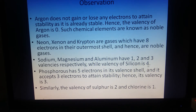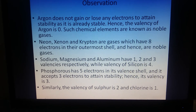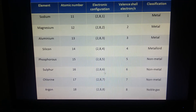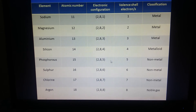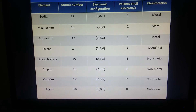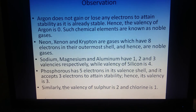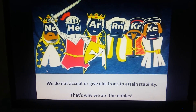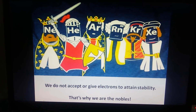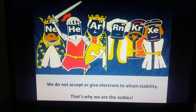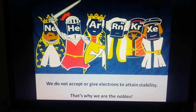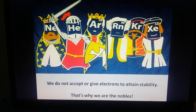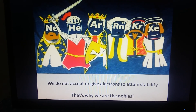The valency of silicon is 4. Phosphorus has 5 electrons in its outermost shell and wants to accept 3 electrons, giving a configuration of 2, 8, 8. The valency of sulfur is 2 and chlorine is 1. The noble elements — neon, helium, argon, radon, krypton, and xenon — do not give or accept electrons because they are already stable, so they are called noble gases.